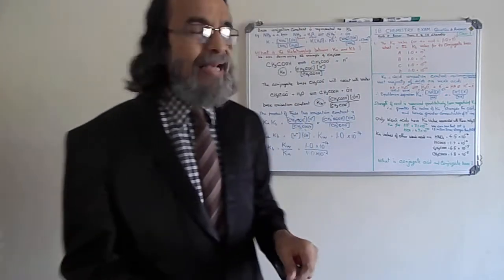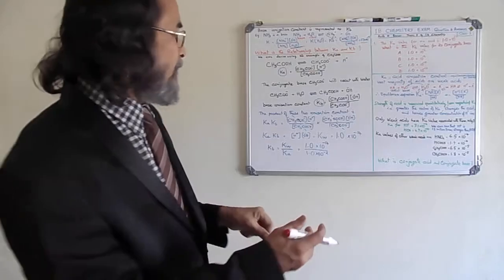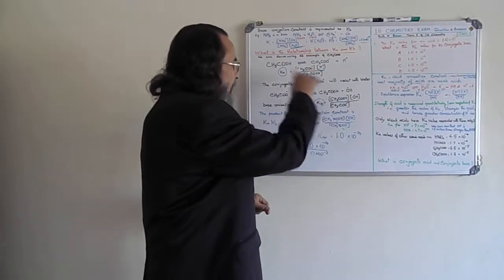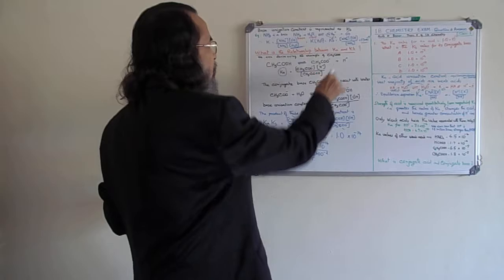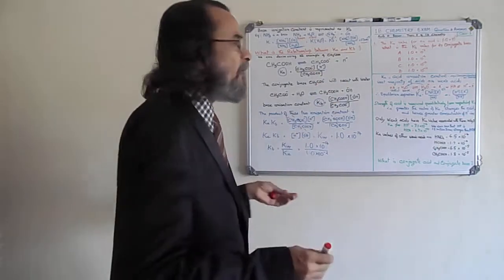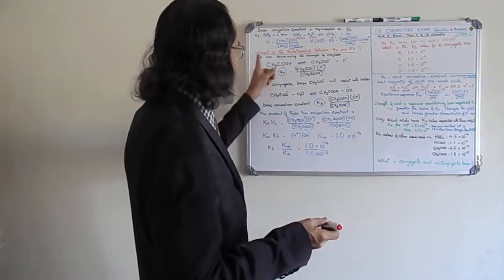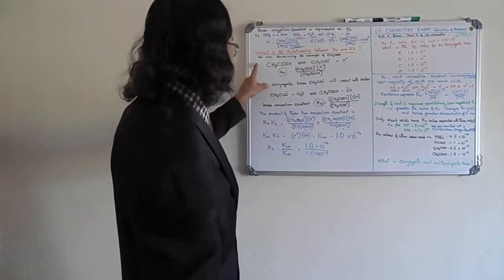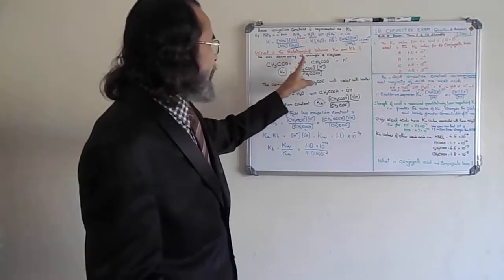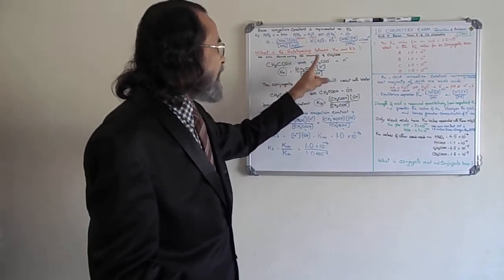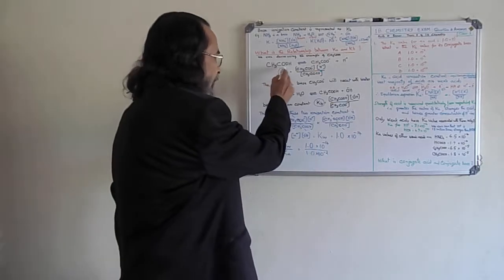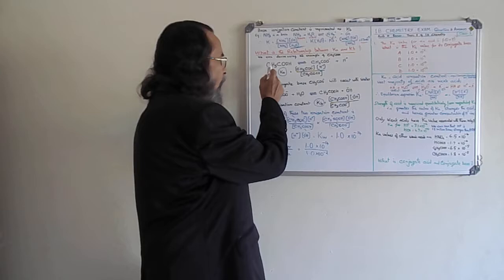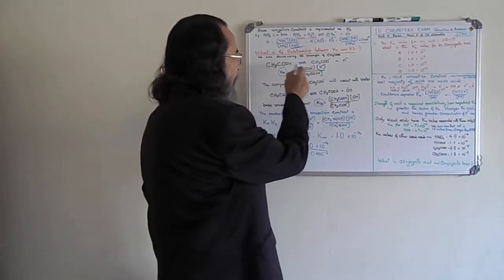The balance between Ka and Kb can help solve problems within seconds. We will now derive the relationship between Ka and Kb using an example — acetic acid, also called methanoic acid in some references.